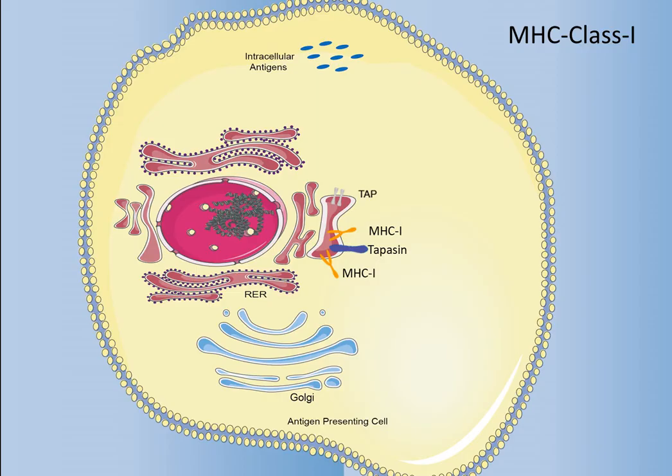Depending on the nature and source of the antigen, APC processes and presents antigens through four pathways: the MHC-class II molecular pathway, the MHC-class I molecular pathway, the non-canonical antigen-presentation pathway, and the CD1 molecular pathway of lipid antigens.